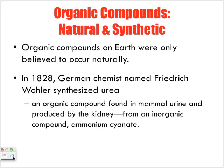Wöhler synthesized urea from an inorganic compound called ammonium cyanate. It had been believed that organic compounds only occur naturally, but with the inorganic compound ammonium cyanate, he was able to actually synthesize urea — an organic compound — demonstrating that organic compounds can be made from non-living sources.